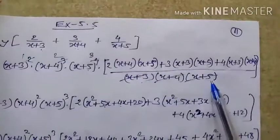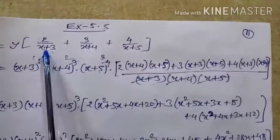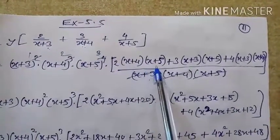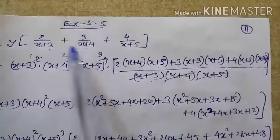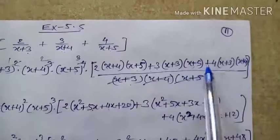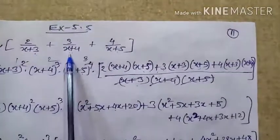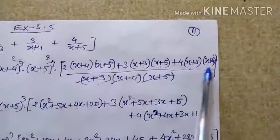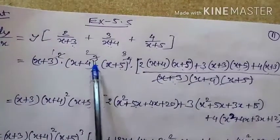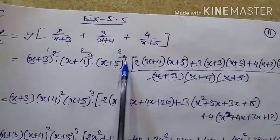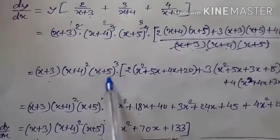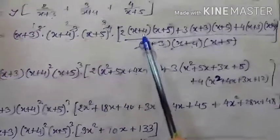When LCM is divided by (x+3), the remaining factor is (x+4)·(x+5), so the numerator becomes 2·(x+4)·(x+5) + 3·(x+3)·(x+5) + 4·(x+3)·(x+4). After multiplying by y = (x+3)²·(x+4)³·(x+5)⁴, the powers partially cancel: (x+3)^(2-1) = (x+3)^1, (x+4)^(3-1) = (x+4)^2, (x+5)^(4-1) = (x+5)^3 remain.